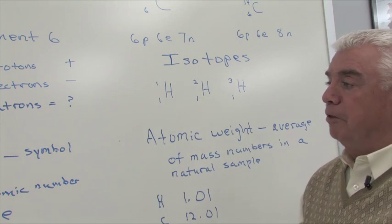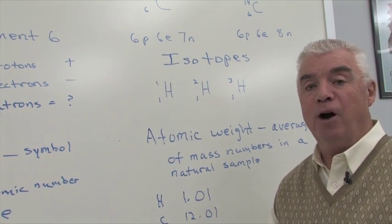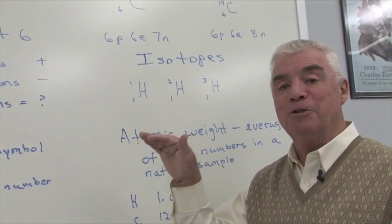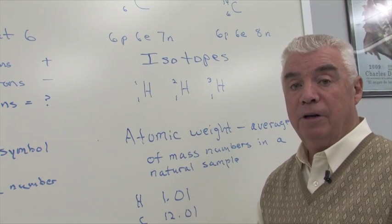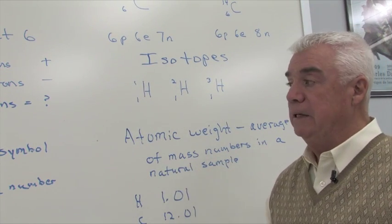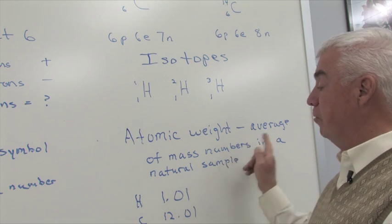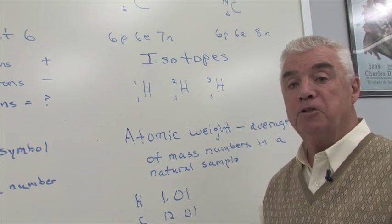We need to point out one more thing here that's sort of interesting. When you look at a chart of the elements, you're given two numbers, a sequence number, and then there's a larger number, oftentimes underneath the element, and it's called the atomic weight. It's an average of the mass numbers in a naturally occurring sample. So for example, the average mass number of these three isotopes of hydrogen would be two.